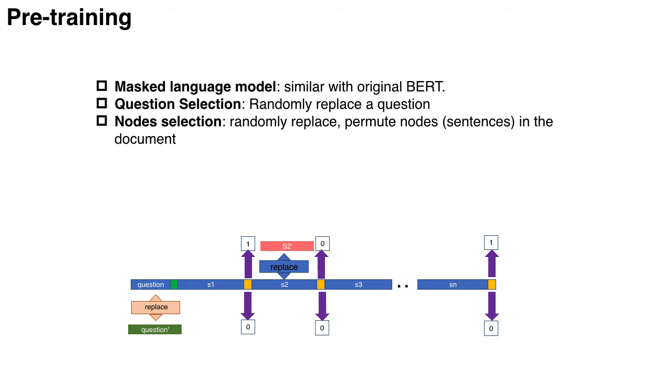In masked language model, a random token is masked and the model should predict the missing words given the context sentence.